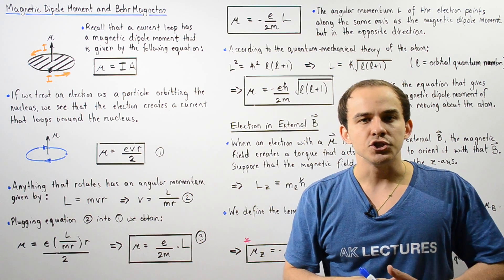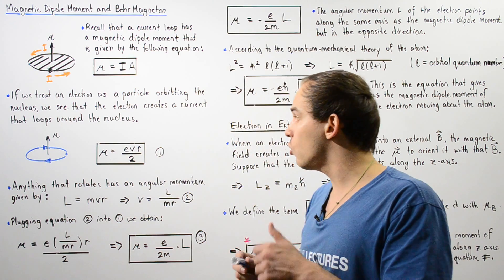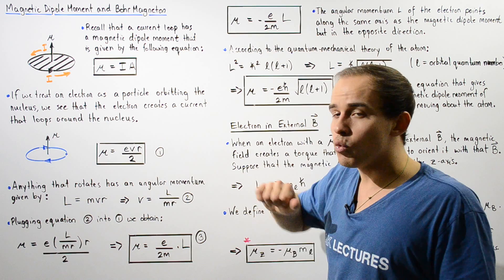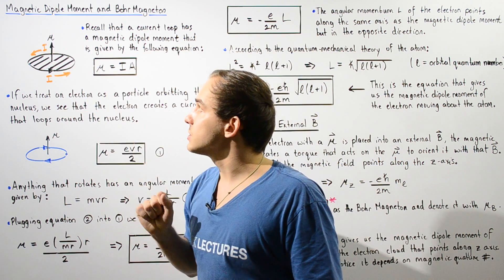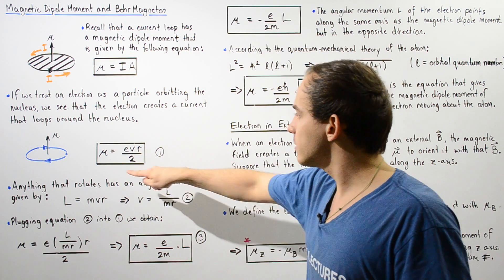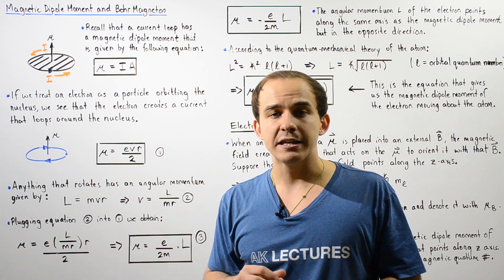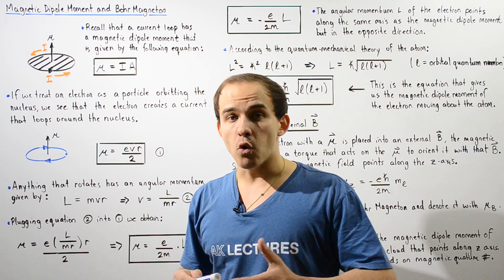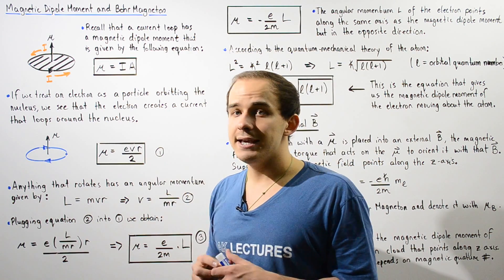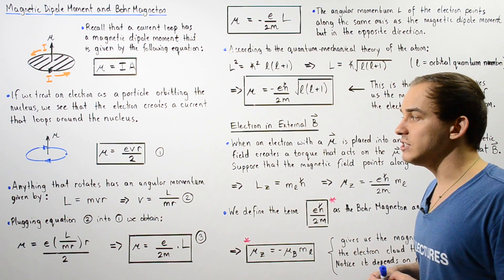In our discussion on classical mechanics and electrons orbiting the nucleus, we were able to show that we can obtain Equation 1, which gives us the magnetic dipole moment of the electron as it orbits the nucleus. So mu is equal to E multiplied by V multiplied by R divided by 2, where R is the radius of the orbit, V is the velocity of that electron in orbit, and E is the charge on that electron, given by negative 1.6 times 10 to the negative 19 coulombs.